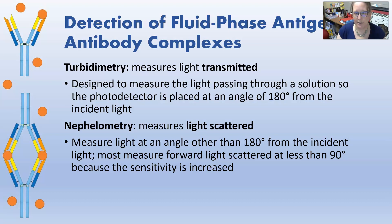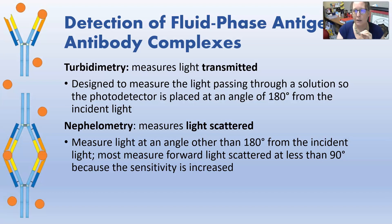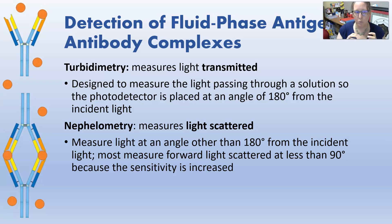Turbidimetry is designed to measure the light passing through the solution, so the detector is placed at 180 degrees — exactly on the other side of the cuvette from the incident light shining through it. In nephelometry, it measures light scattered at an angle other than 180 degrees — usually at 90 degrees. You have the incident light shining on the sample, and the little particles in solution scatter light like a disco ball. You capture it at an angle because you're not trying to capture the light being shone through the sample. The more particles there are, the more light will be scattered. Using around 90 degrees or a little less works well because the sensitivity is increased at that angle.